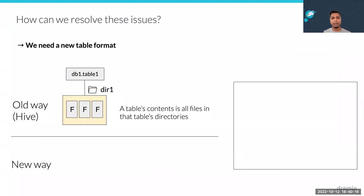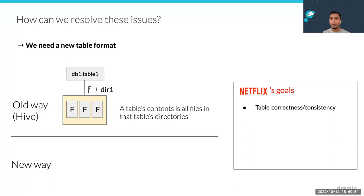So how can we solve this? Netflix faced these problems at scale and went back to the drawing board. Instead of applying band-aids to each individual problem, they took a step back to understand the root cause. Their goals were: table consistency and correctness — you need to trust the data to make data-driven decisions. All queries, no matter when or by whom they're run, should return the same result. That's the expectation.